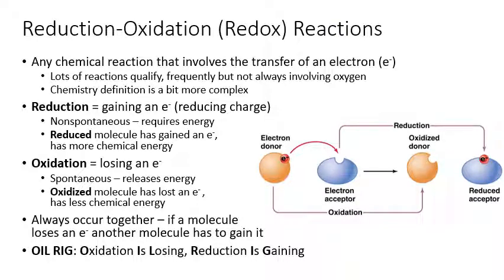To understand why we need enzymes catalyzing reactions in cells, we need to understand how chemical reactions and energy work. A lot of the important reactions in the cell, especially in catabolism, are redox reactions, or reduction-oxidation reactions. Any chemical reaction in which an electron is being moved from one molecule to another counts as a redox reaction. There are tons of different reactions where an electron gets transferred, so there are many, many redox reactions that happen in a cell. A lot of them involve oxygen, but not all of them do.